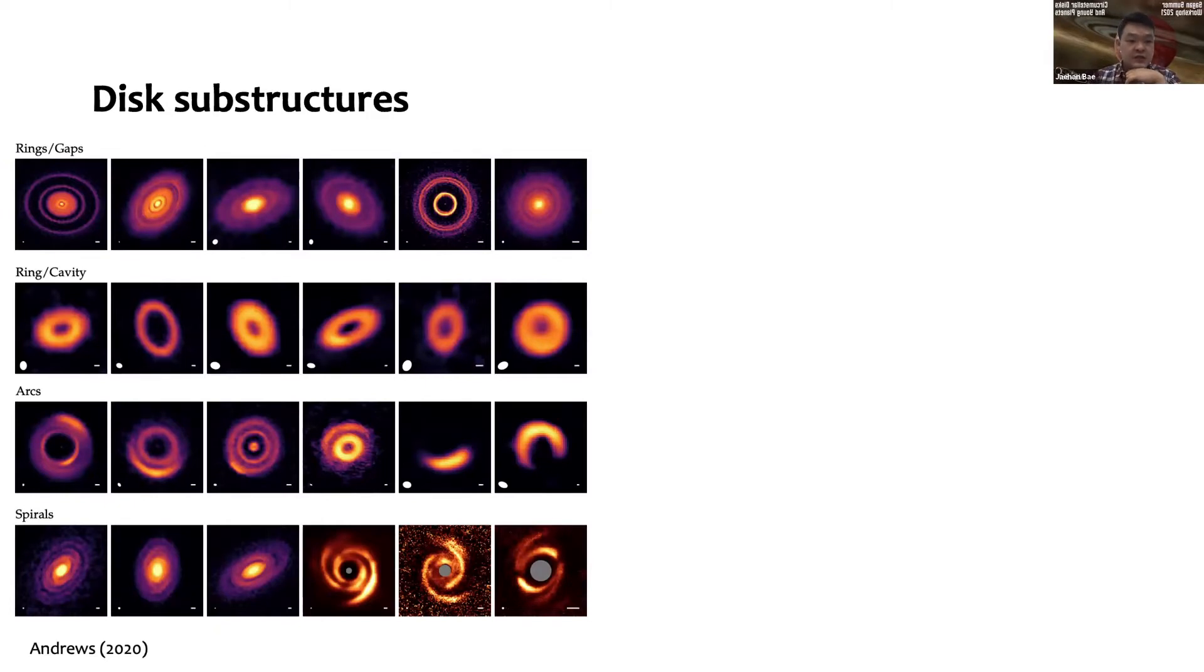What you see is there are rings and gaps. It turned out that the most common type of substructures are rings and gaps. There are also wings and a big cavity at the middle of the disk, arcs like banana-shaped vortices, and spiral arms in the disk like these two-armed spirals you see here.